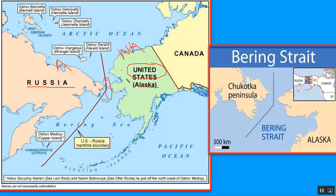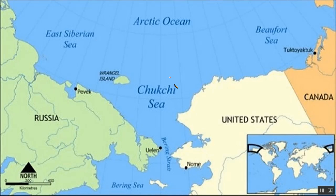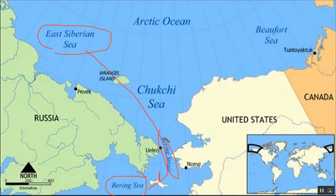Here is the Bering Strait on the map. You can see it connects two water bodies: the Bering Sea on one side and the East Siberian Sea on the other. It separates the two land masses, Asia and North America.